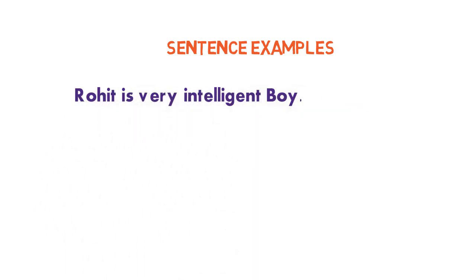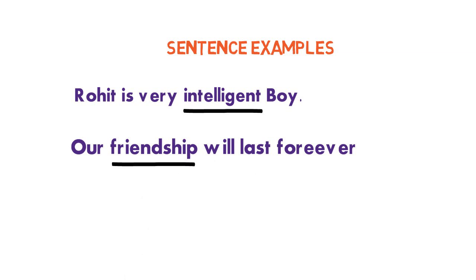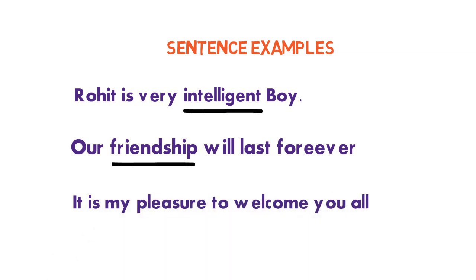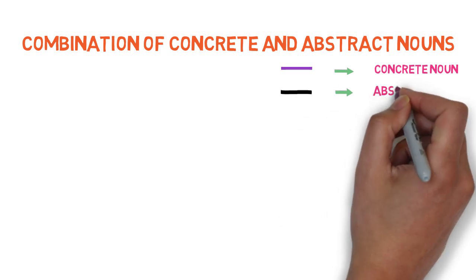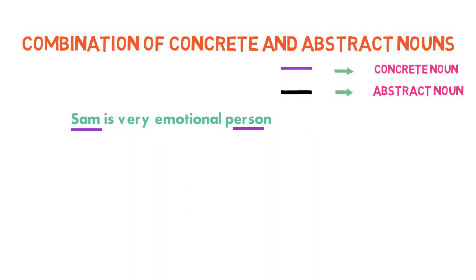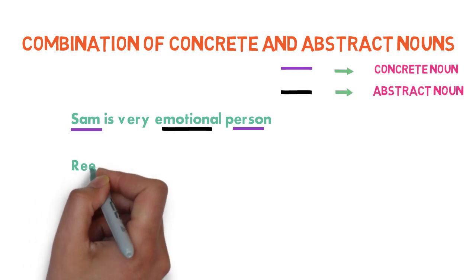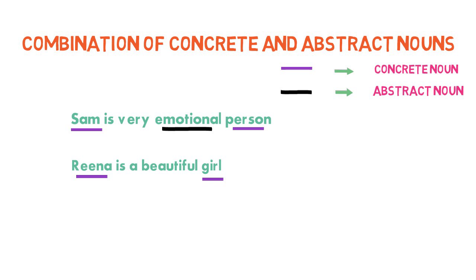Let's see some examples. Rohit is a very intelligent boy — here intelligence defines the quality of Rohit, so it is an abstract noun. Our friendship will last forever — here friendship defines the relationship between us, so it is an abstract noun. It is my pleasure to welcome you — you cannot touch pleasure or hear its noise, so pleasure is an abstract noun.